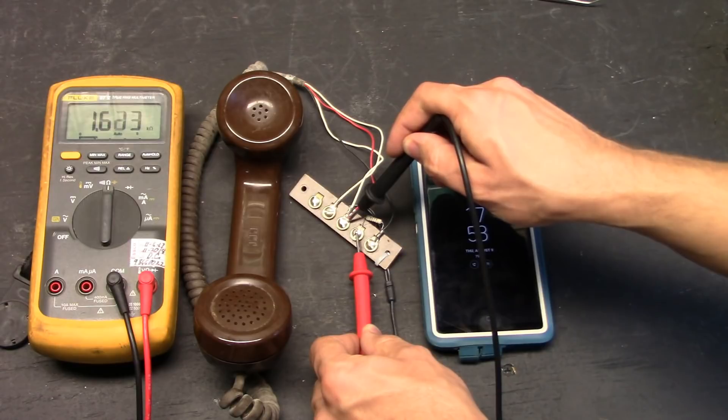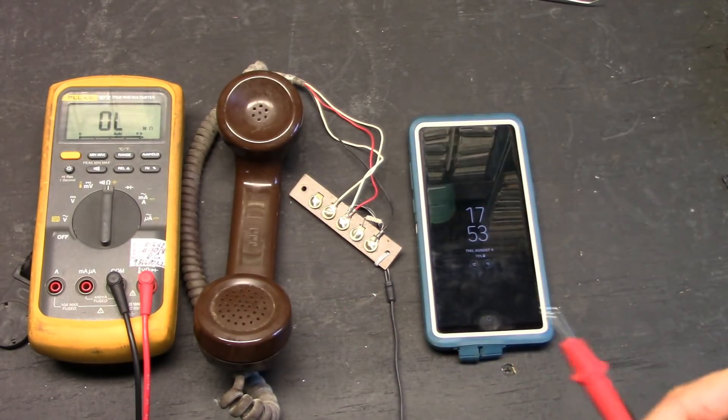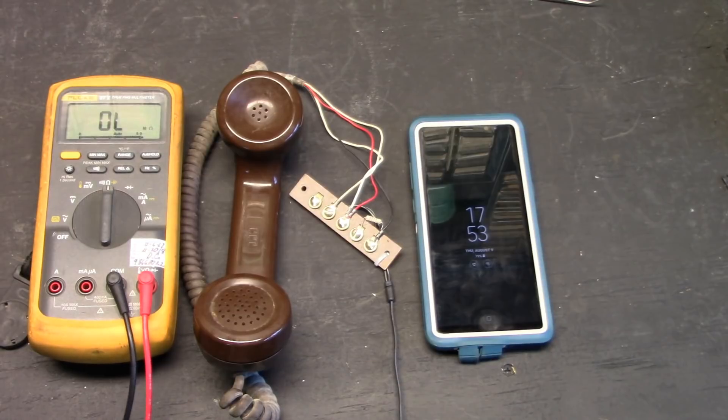Of course, that resistance will change as it picks up sound. Watch the meter change when I yell. I'm yelling blah blah! Yeah, so, because carbon microphones are not like your dynamic and condenser microphones, a carbon microphone changes resistance according to the audio.